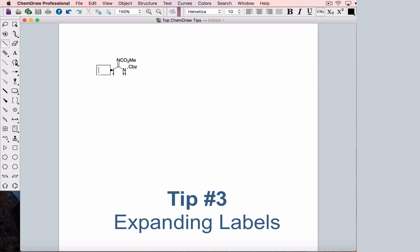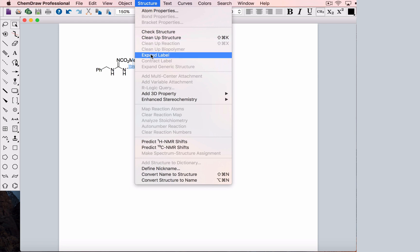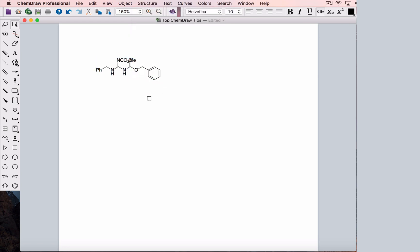Let's say one of your lab mates presented this structure in group meeting and you can't for the life of you remember what the CBZ group looks like. Select the abbreviation and then click on expand label in the structure menu. Now the carboxybenzyl group is drawn out for you, but it's overlapping with this other label.